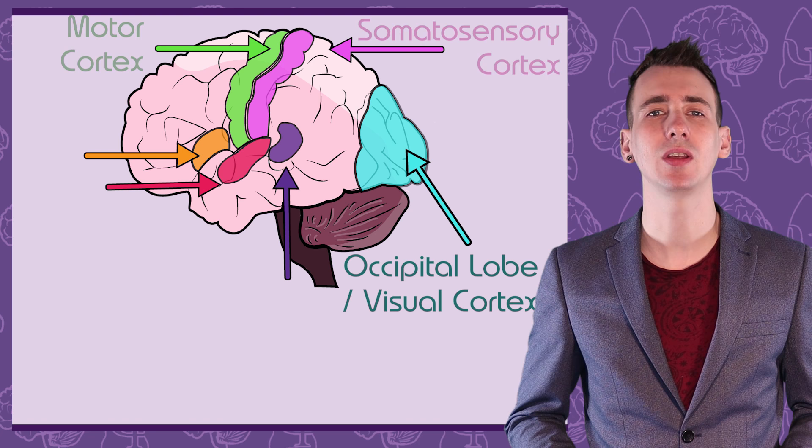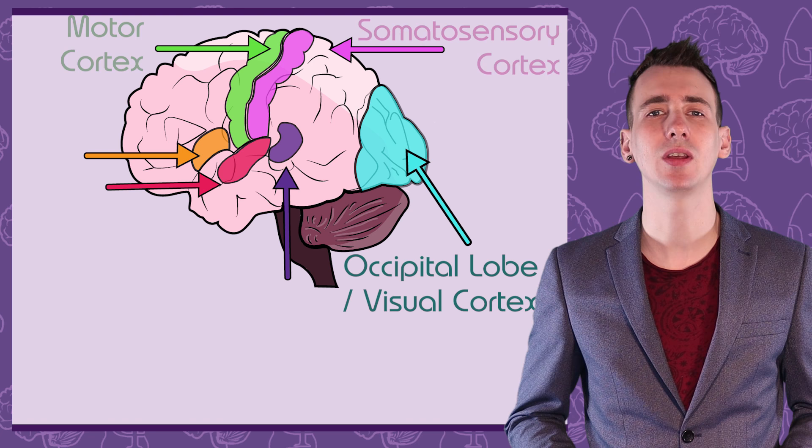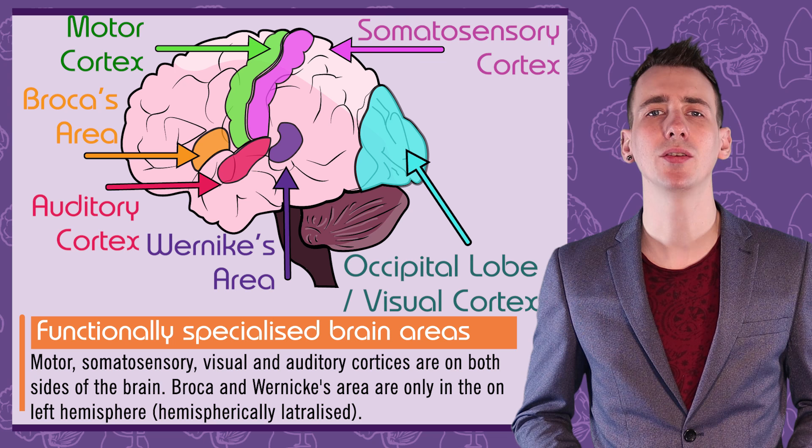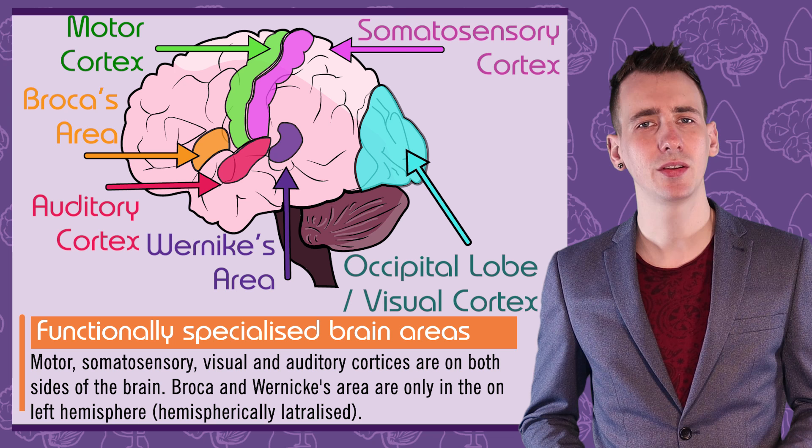The six regions are the visual cortex, the motor and somatosensory cortices, the auditory cortex, and Broca's and Wernicke's areas. The first four are found in both sides of the brain. However, Broca's and Wernicke's areas, which deal with producing and understanding language, are generally in the left hemisphere. This is an example of hemispheric lateralisation.